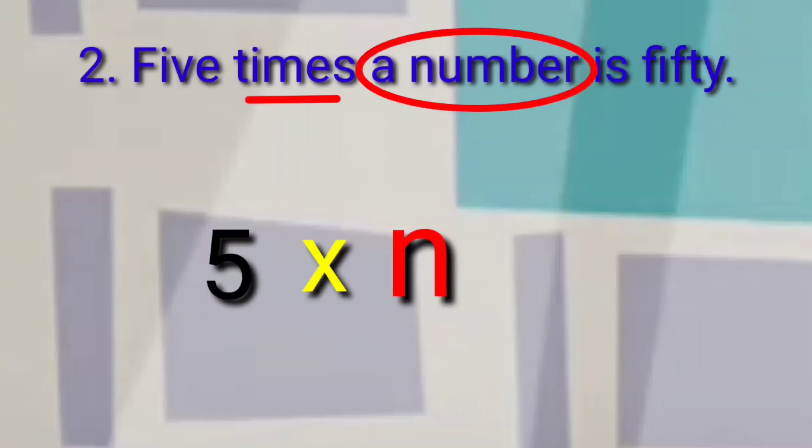Number two: five times a number is fifty. In this situation, you'll need to multiply five by a variable because of the word times. Times means multiply. For a variable, I will use N. So, in this example, I will write first the five because in multiplication, the number should come first before the variable. The answer is five times N equals fifty.